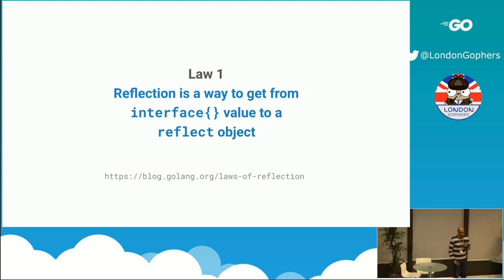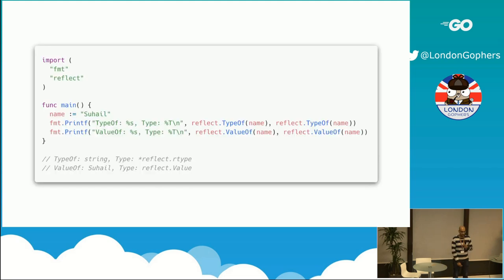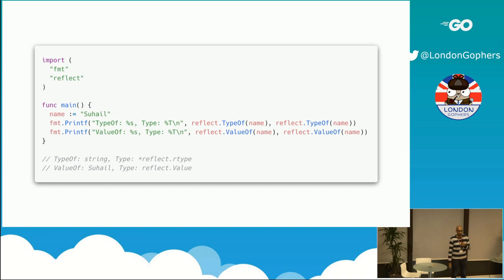Before we dive into that, let's talk about the laws of reflection in Go. There are three particular laws, and once you get familiar with them, understanding reflection gets a lot easier. Law number one: reflection is a way to get from an interface value to a reflect object. Concretely, when you call a method like reflect.TypeOf or reflect.ValueOf, the argument you pass in is taken in as an interface, and what you get back is a struct — reflect.Type or reflect.Value — depending on what method you call.